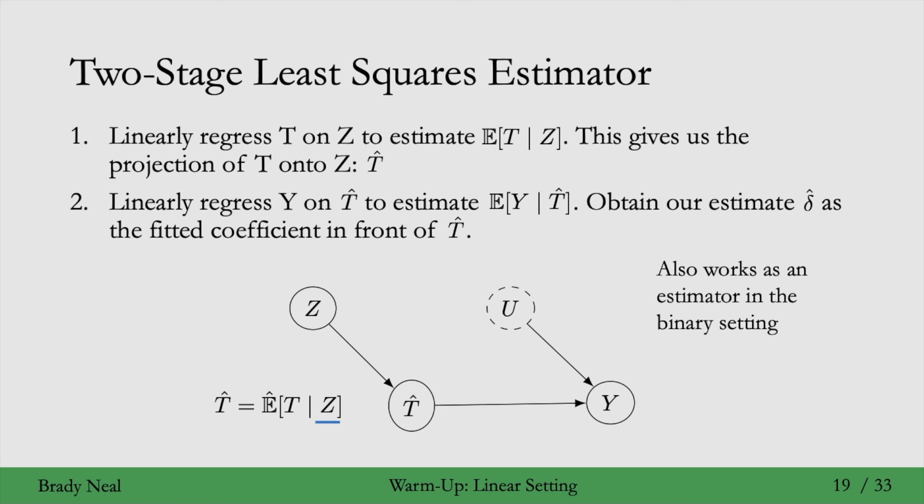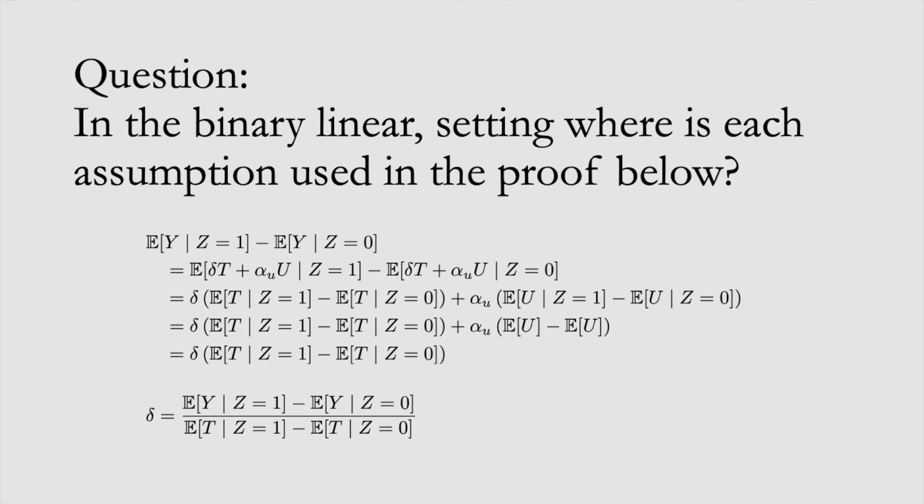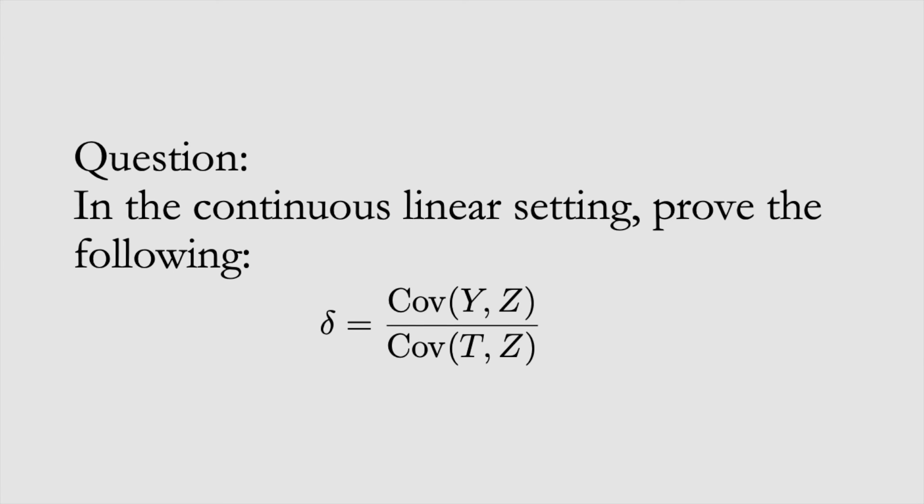Here's the proof we saw in the binary setting again. The question is: where do we use each of the four assumptions in the proof? Then the next question is for the continuous linear setting: prove that delta is equal to the covariance of y and z divided by the covariance of t and z.